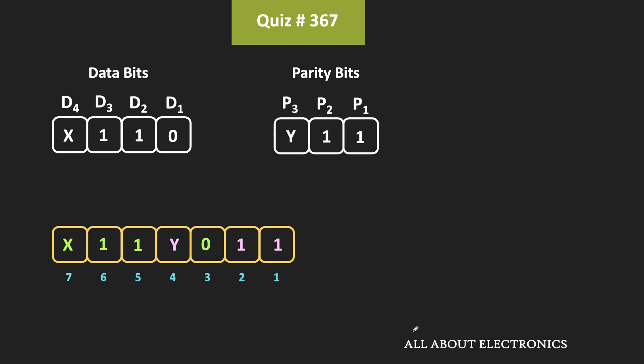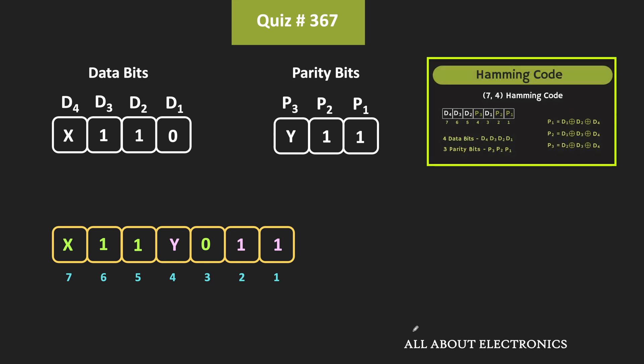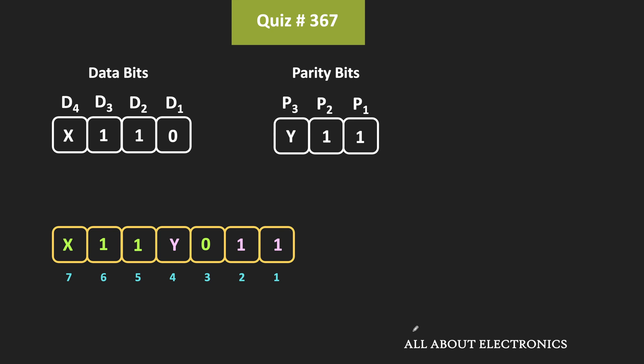If you have followed my recent video on the main channel on Hamming code, we have seen that these parity bits represent the parity of certain bits in the overall code. Parity bit P1 represents the parity of bit positions 3, 5, 7, and P1 itself at bit position 1. Likewise, parity bit P2 represents the overall parity of bit positions 3, 6, 7, and P2 at bit number 2. Parity bit P3 represents the overall parity of bit positions 5, 6, 7, and P3. These parity bits P1, P2, and P3 are selected such that the overall parity of the group remains even.